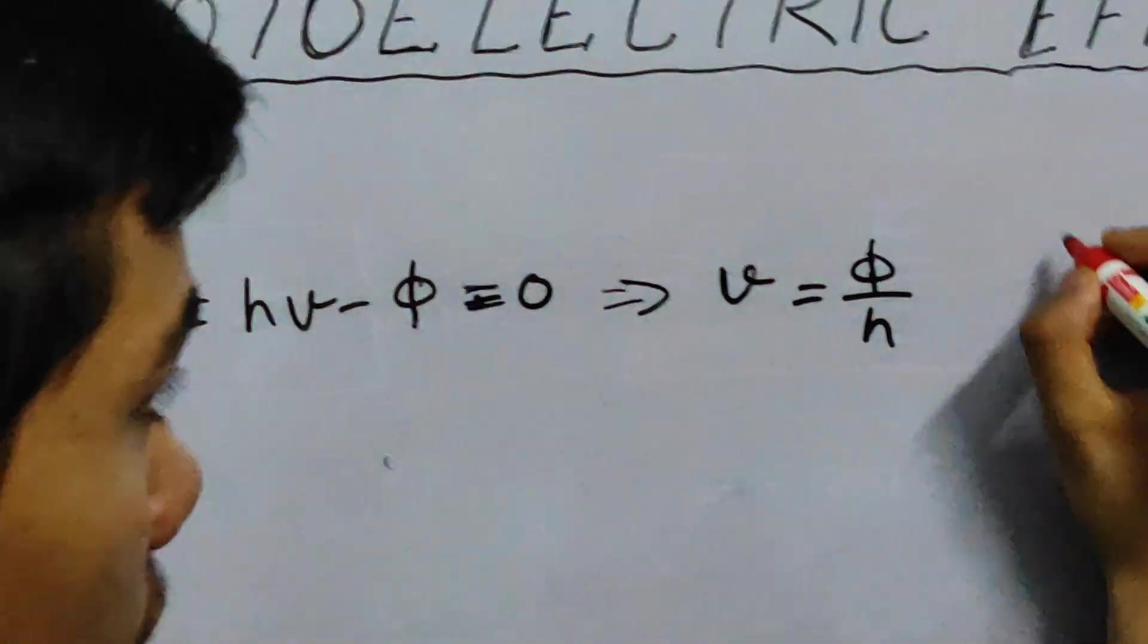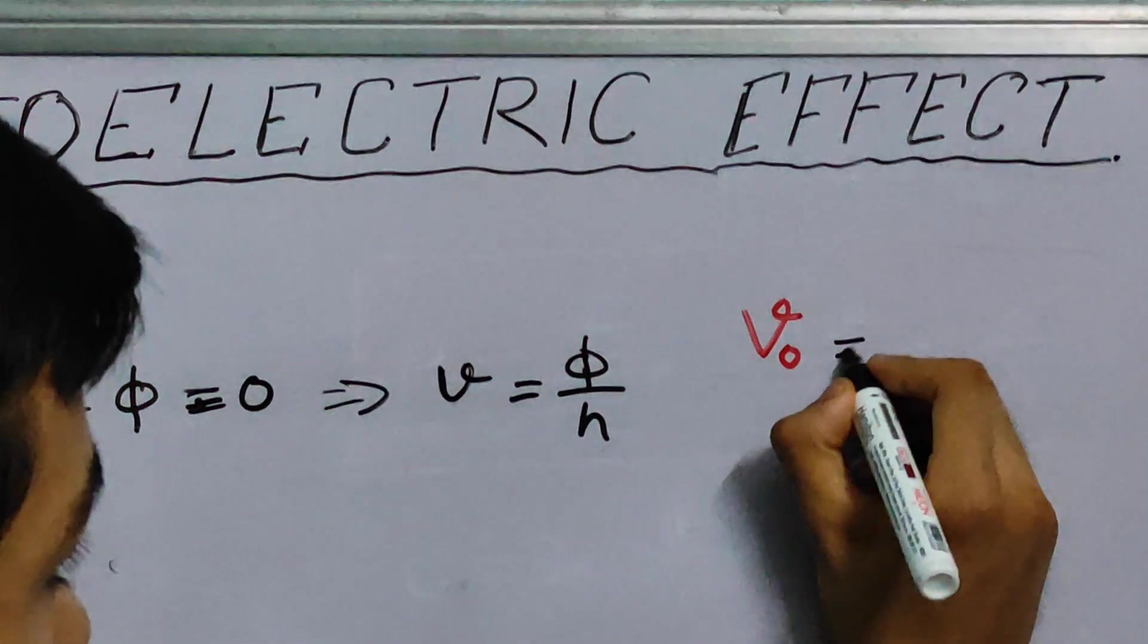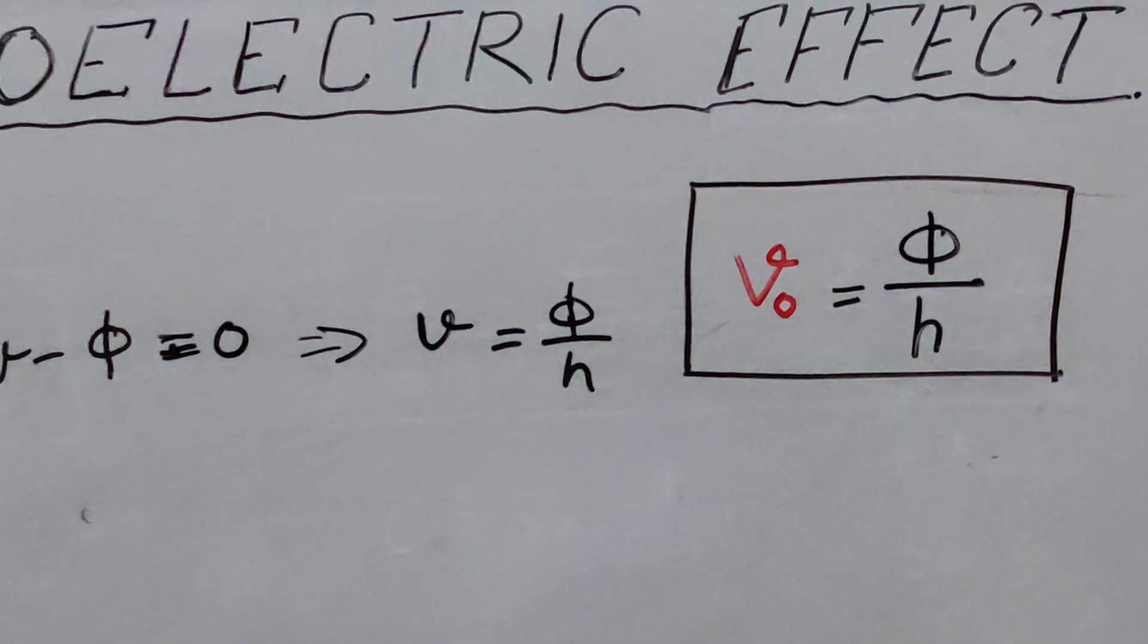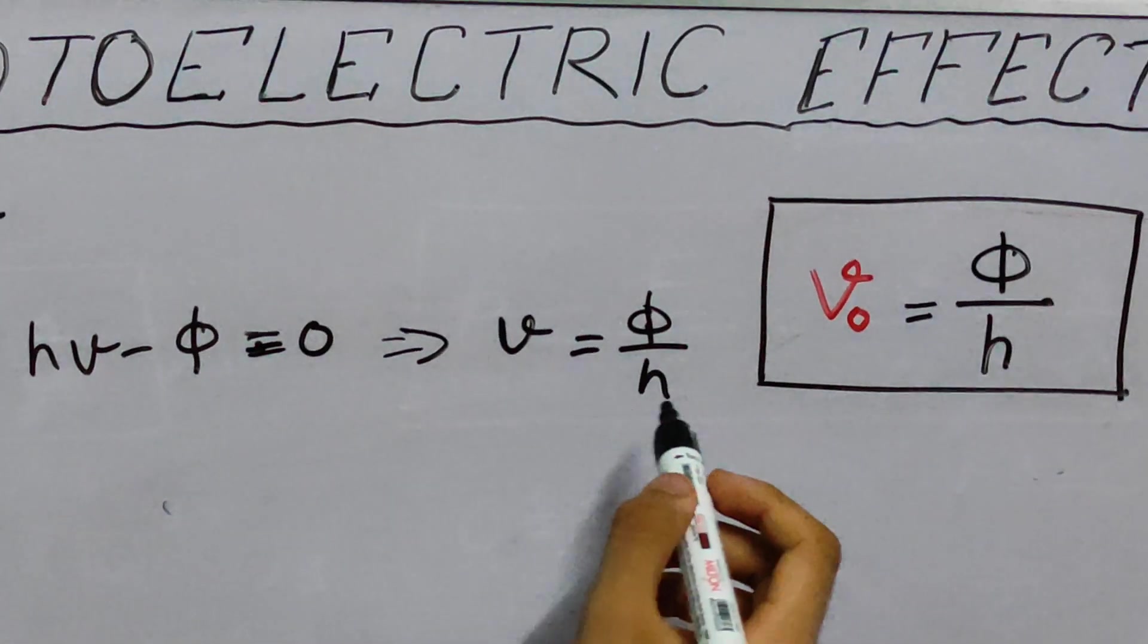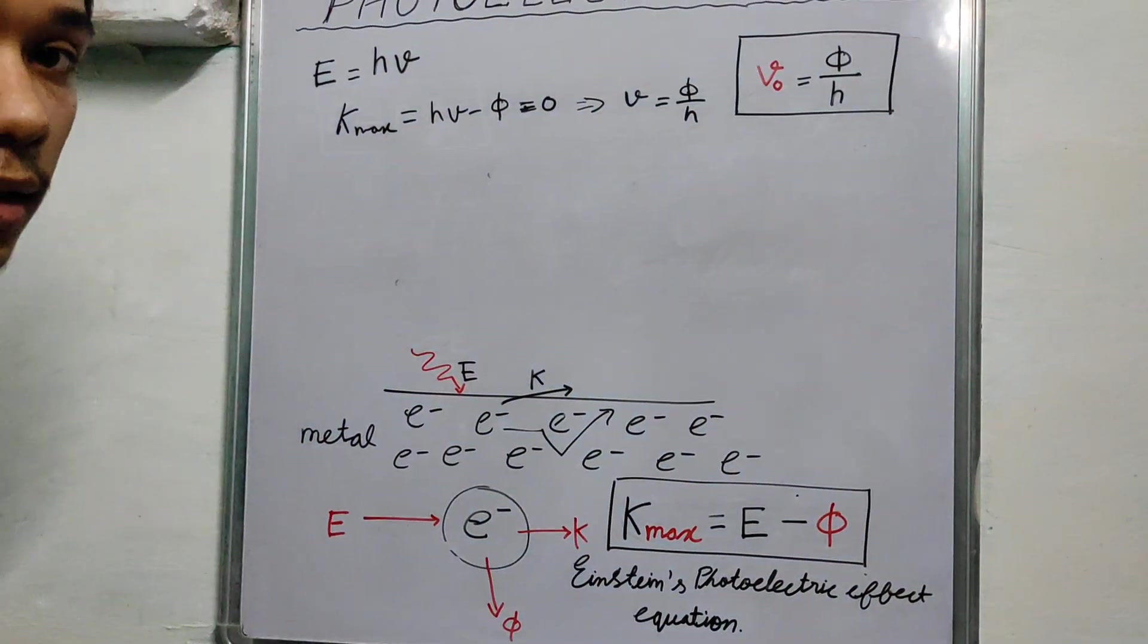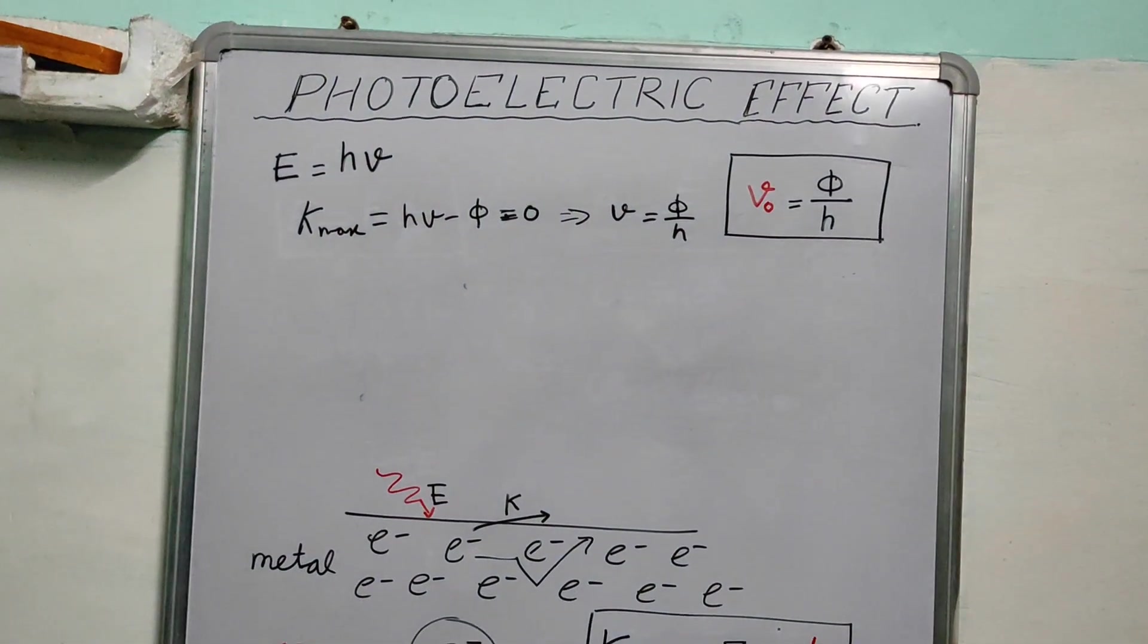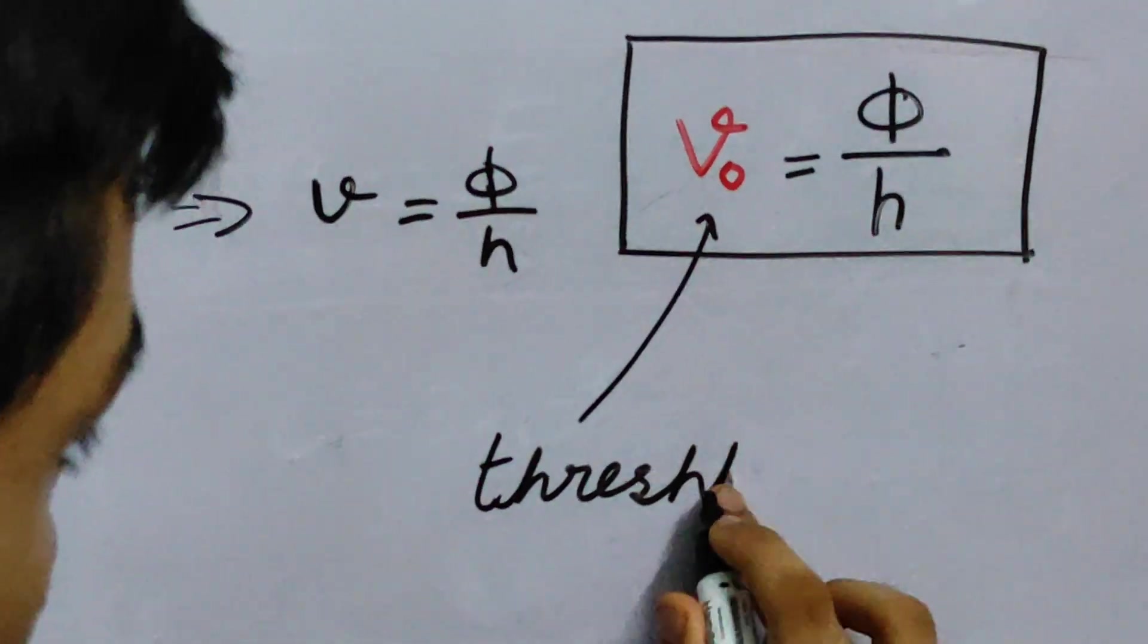This frequency is a very special frequency. So, this is represented as nu0 as phi by h. What does this tell? If your frequency of the photon is greater than this particular nu0, then only then photo electrons will get emitted. If it's lesser than that, then you won't see any photoelectric effect. Clearly, it's independent of the intensity of the light. It only depends on nu0. And this frequency is known as threshold frequency.